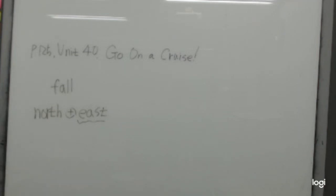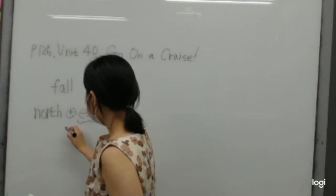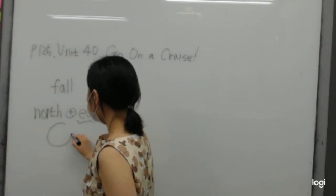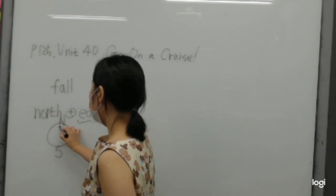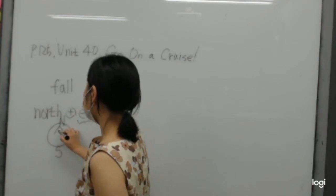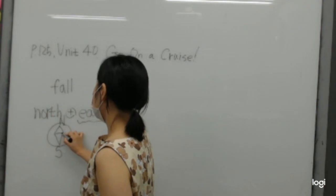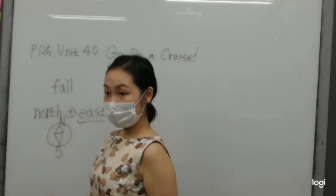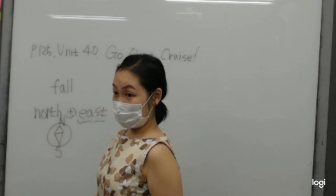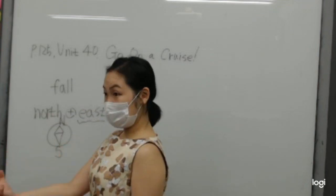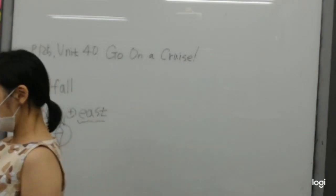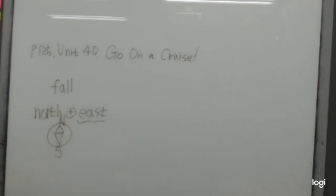Do you know what a compass is? Yes. A compass is like this — there is an N, and this is S. That's a compass. When we find the direction, we bring the compass, so you can say it is North or it is West.